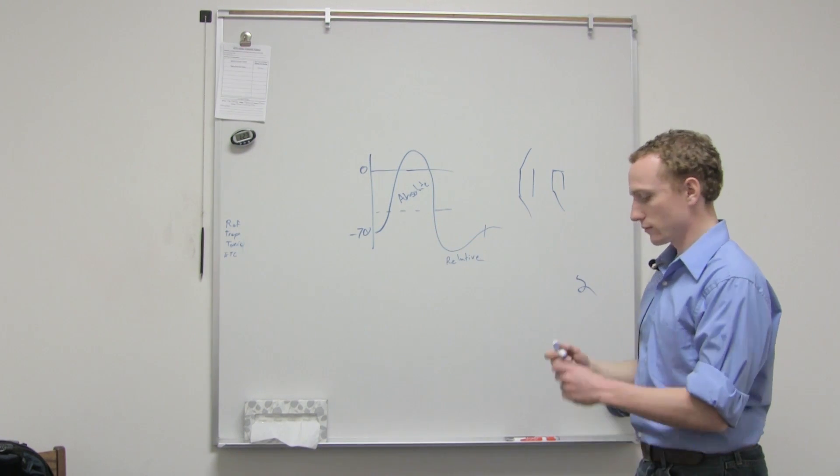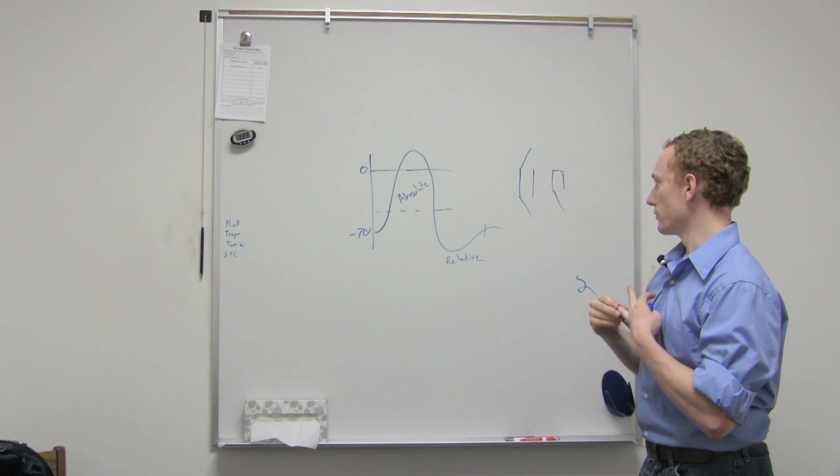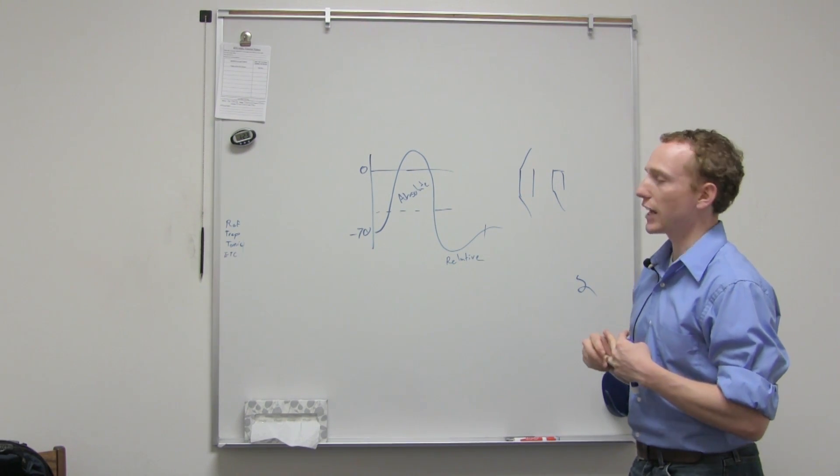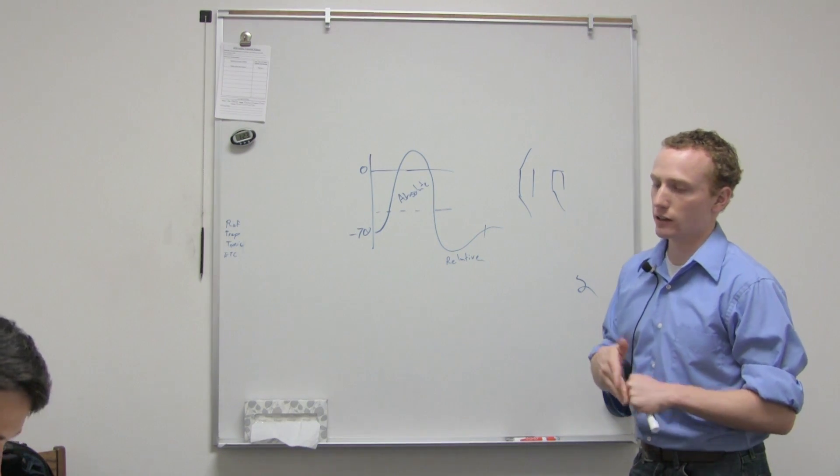So that has to do with all-or-none, pretty much? Yeah, it's kind of. It's more that we can't have an action potential while an action potential is occurring in an individual spot.